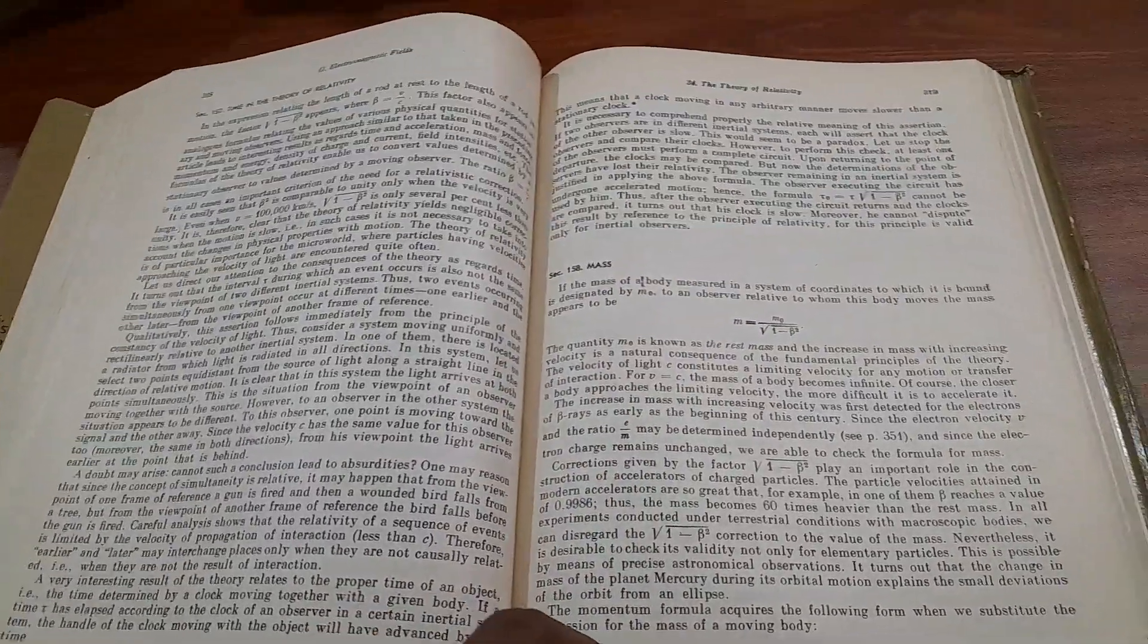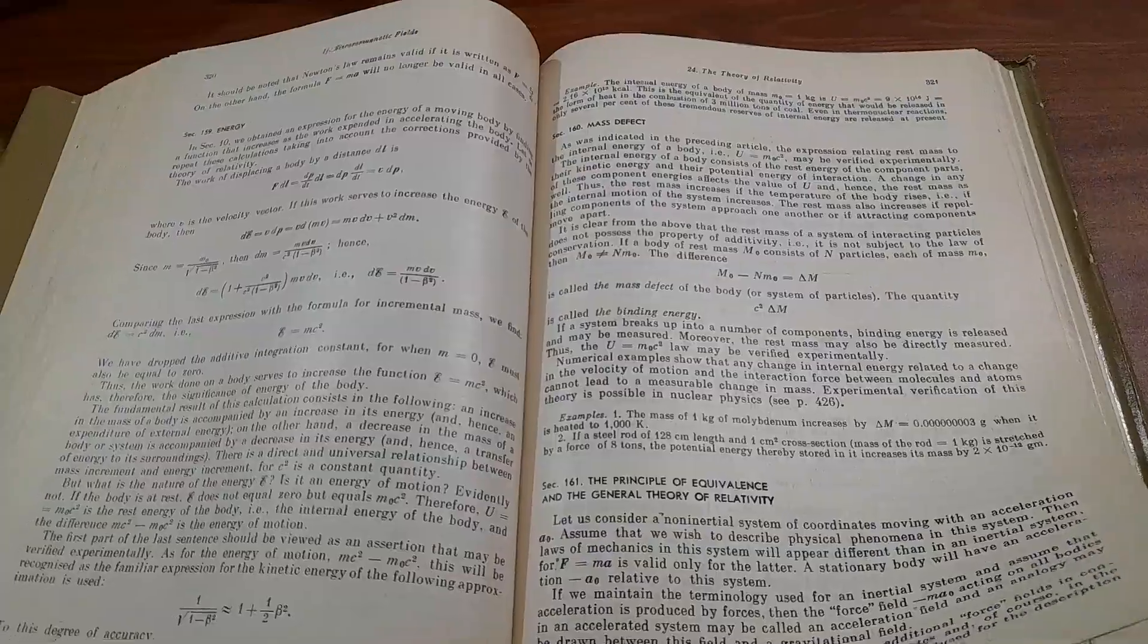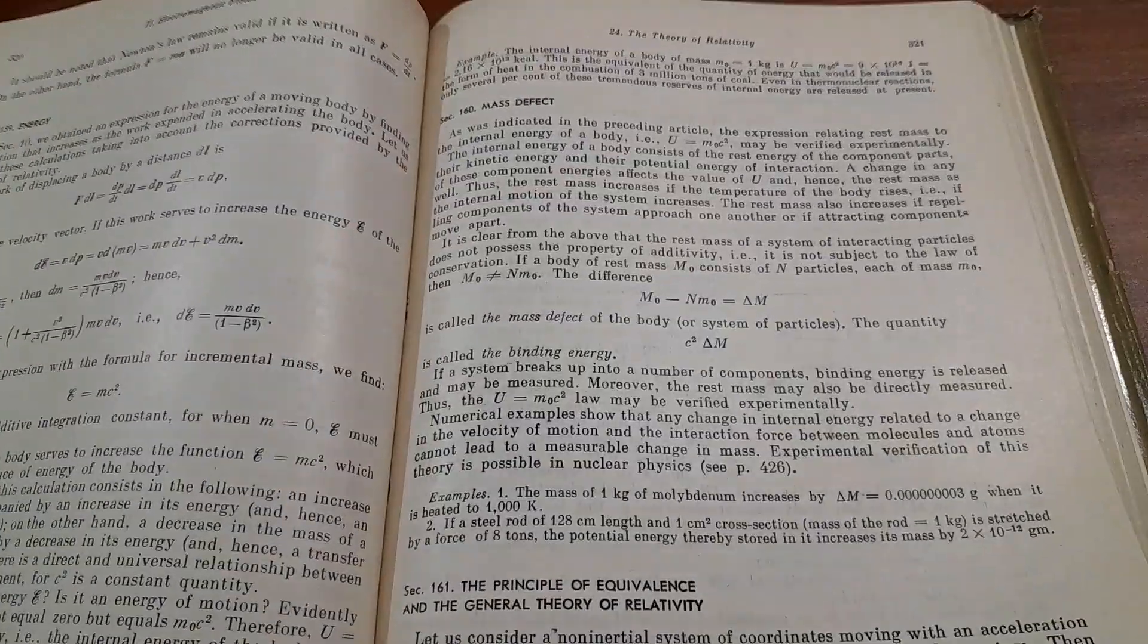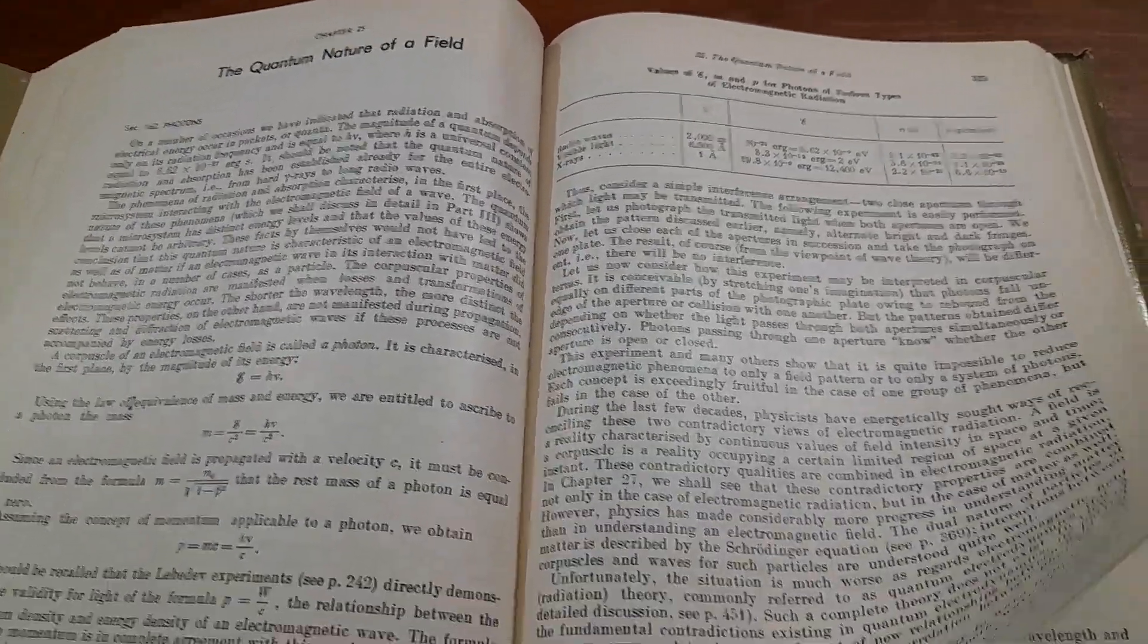Then it starts with mass, mass defect. Everything is given in detail, content and nature of a field. We are going super slow, so please feel free to speed up the video.